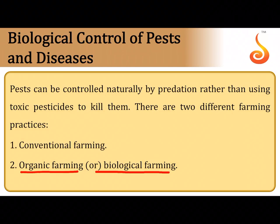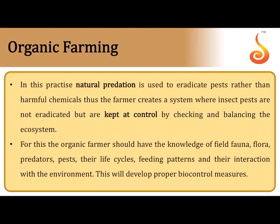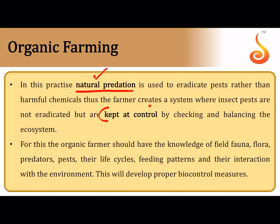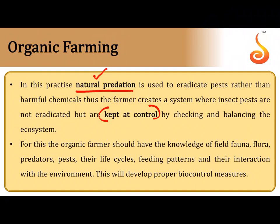In organic farming, natural predators — insects or microorganisms — are used to destroy other insects and pests that threaten crop production. By using natural insects and microbes already present in nature, we keep insects and pests under control without introducing toxic chemicals into the surrounding environment.